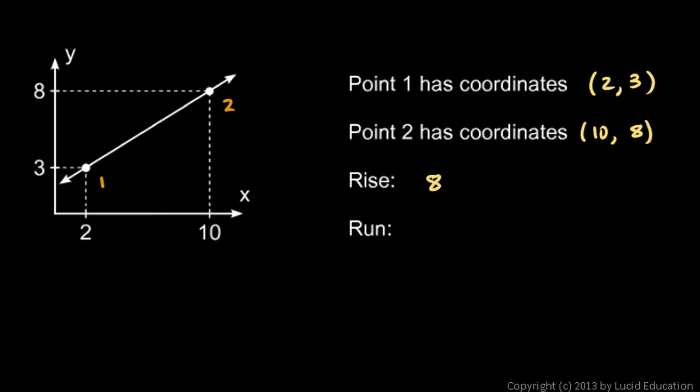Write it that way: 8 minus 3, which is of course 5. But the point is that it's the difference between those two numbers that gives us that interval.